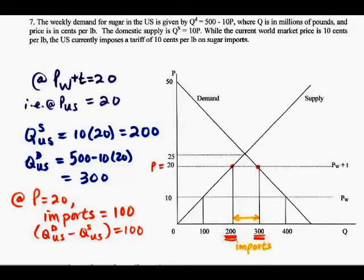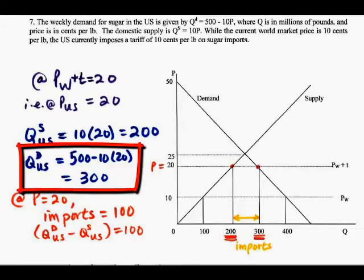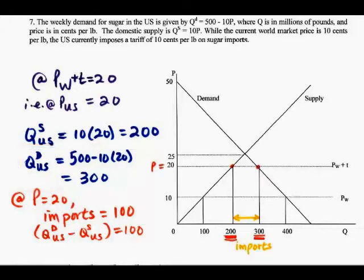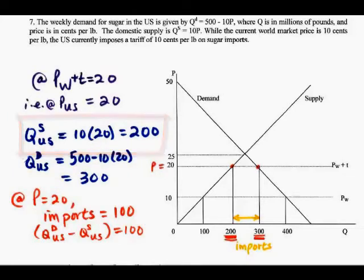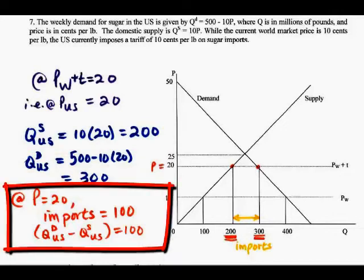Or you can plug the 20 in on the demand equation first, and you'll get 300 as the quantity being demanded at a price of 20. At a price of 20, the quantity supplied by U.S. suppliers is 200, 10 times 20. So the distance between the quantity being supplied by U.S. suppliers and the quantity being demanded by U.S. consumers is 100.